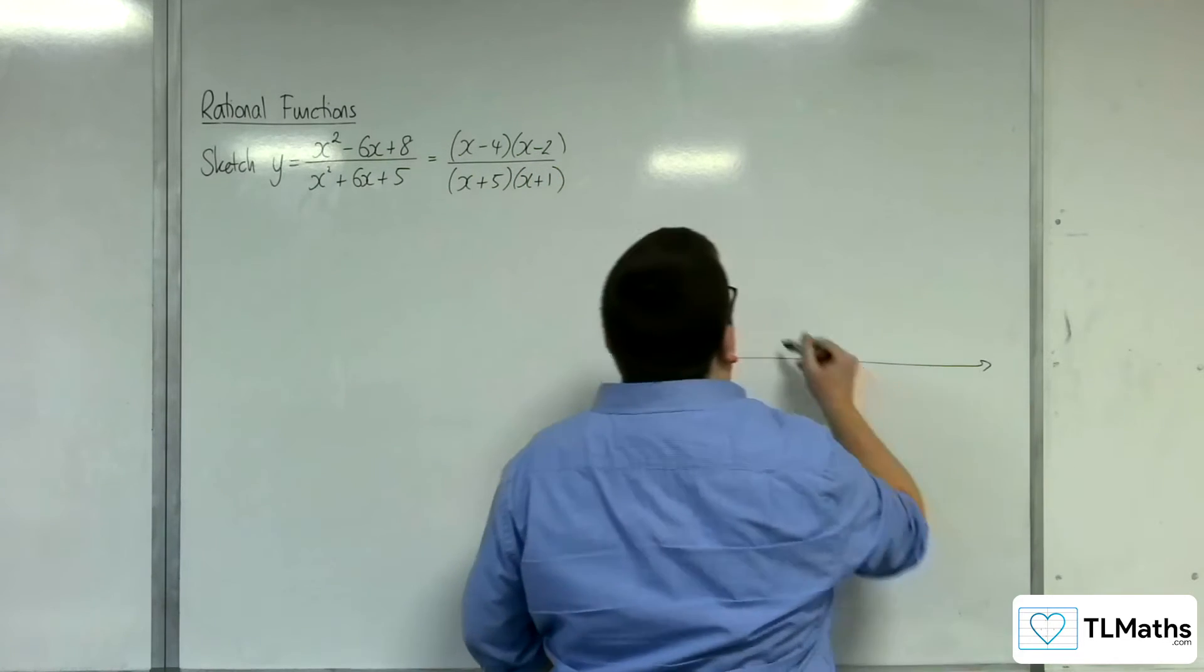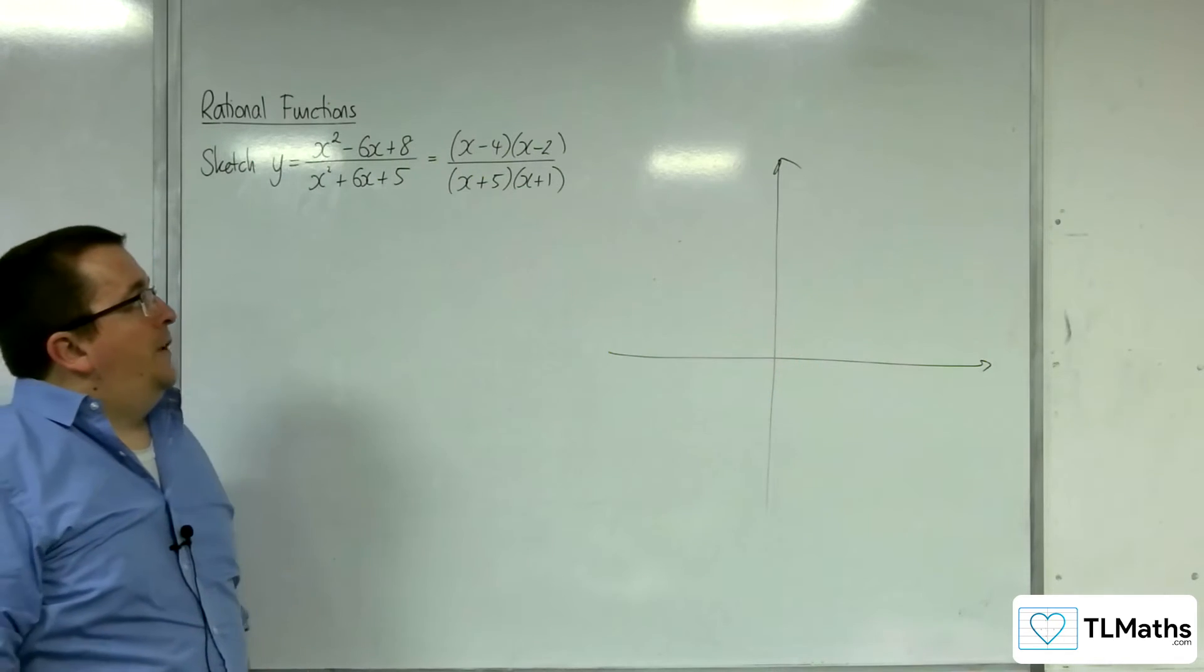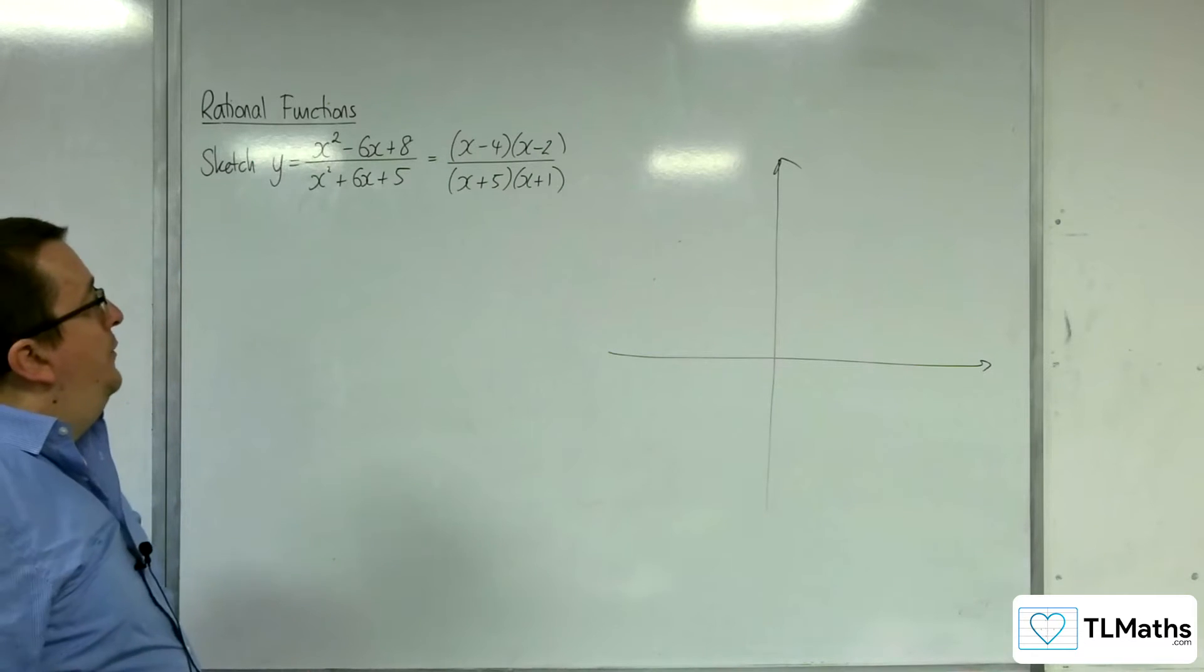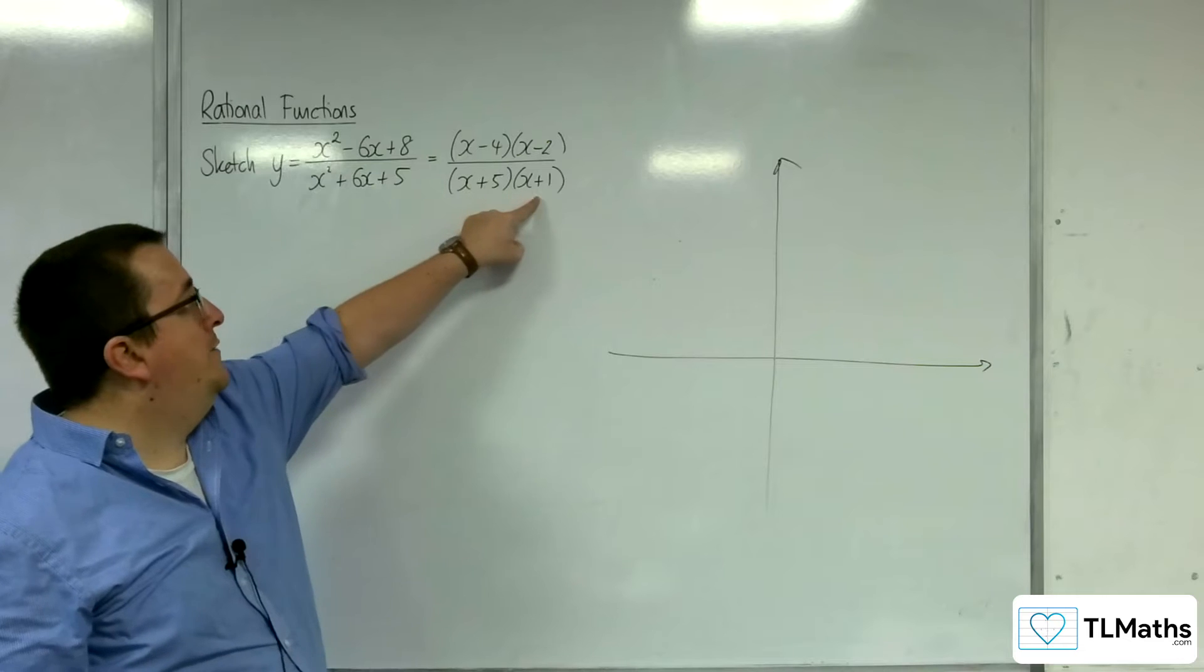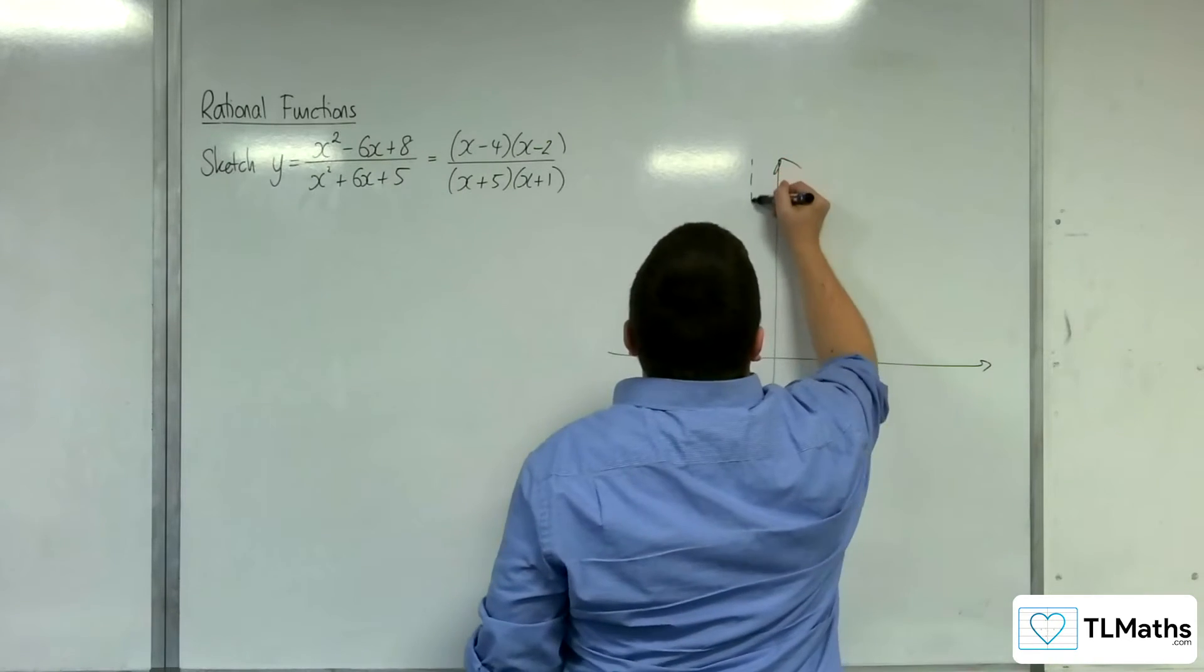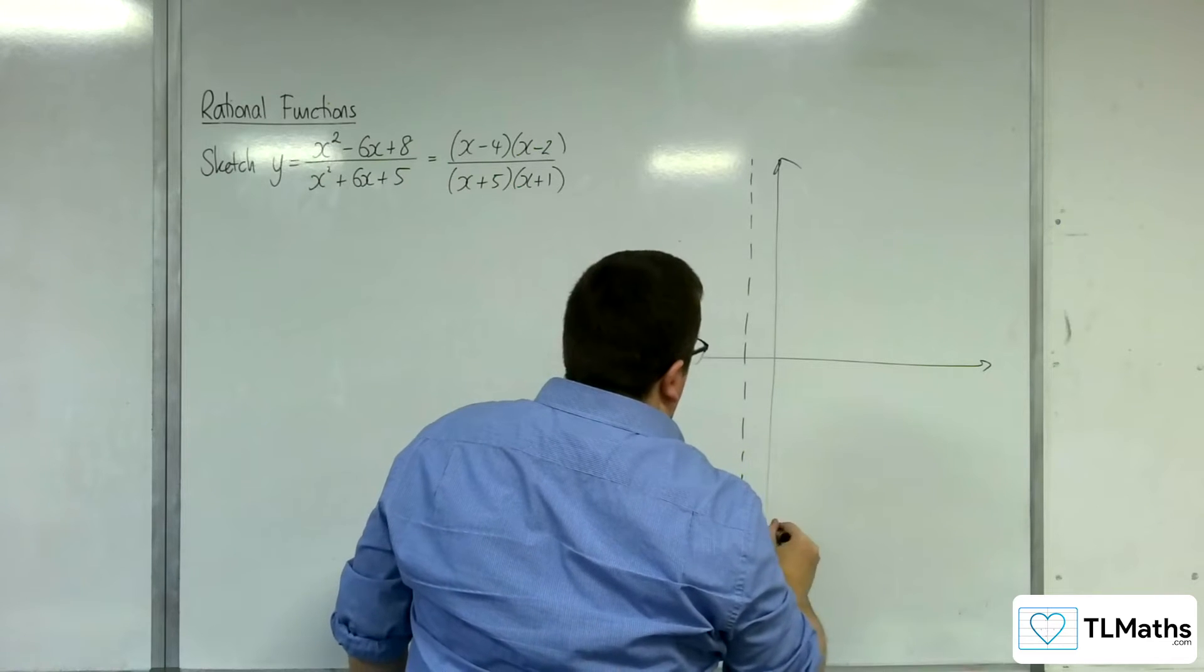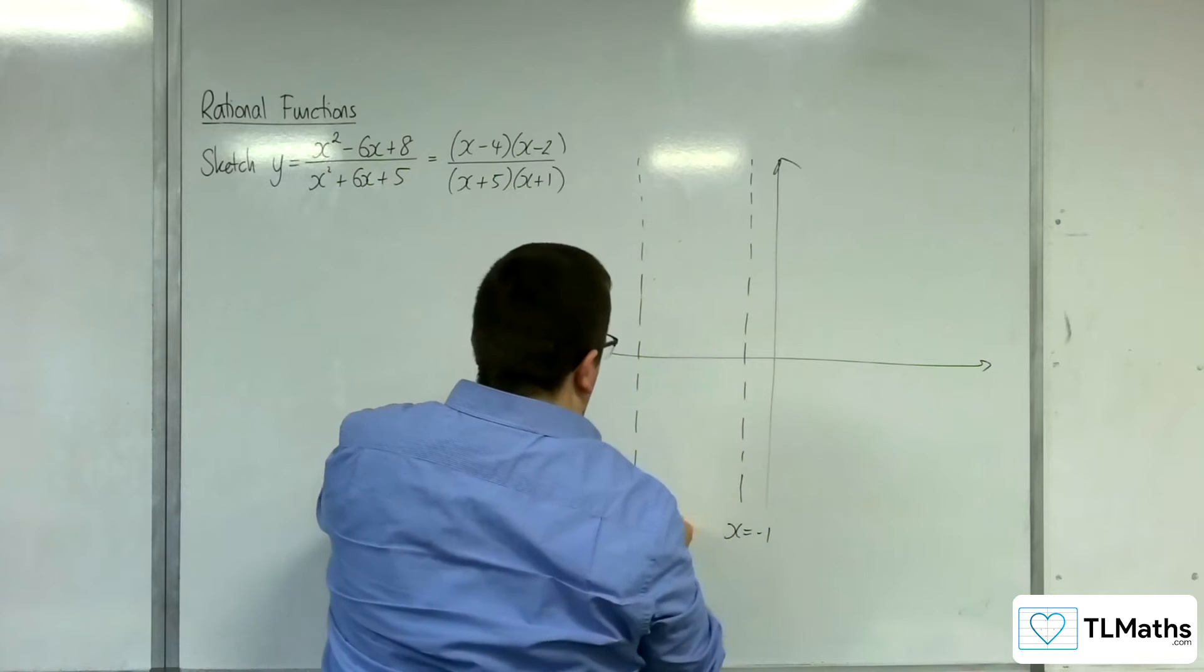Let's draw some axes. So first thing we want to identify on our sketch is any vertical asymptotes. That's when the denominator is 0, so we can see that there's going to be 1 at minus 5 and 1 at minus 1. So that can be x equals minus 1 and x equals minus 5.